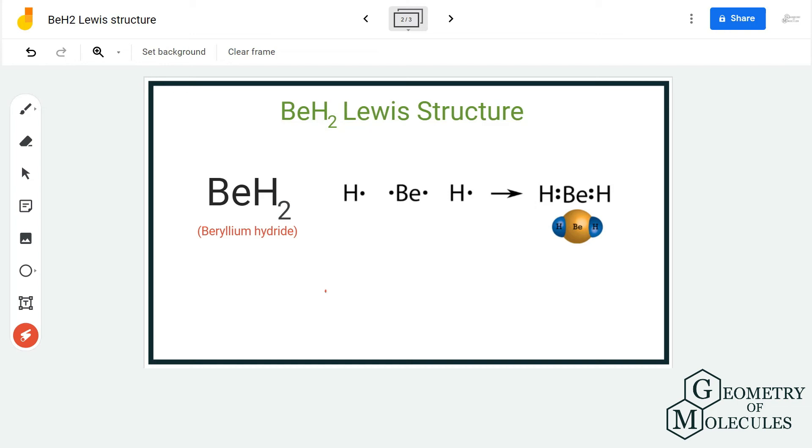Generally, elements can either have two valence electrons in their outer shell or eight, but this is an exceptional case. It is fine if beryllium has four valence electrons in its outer shell.